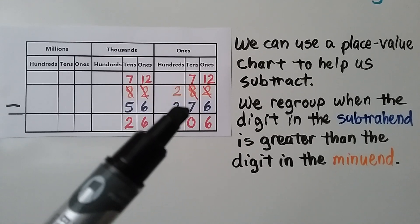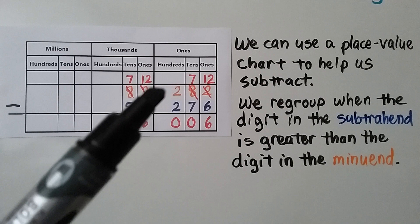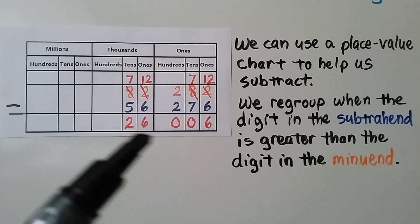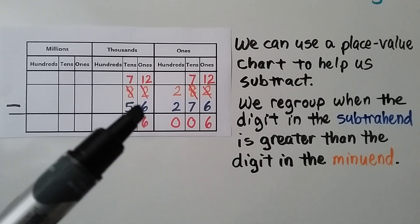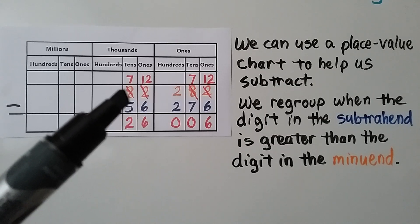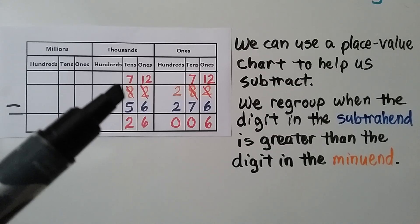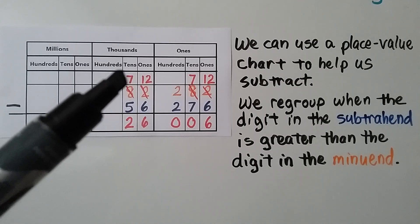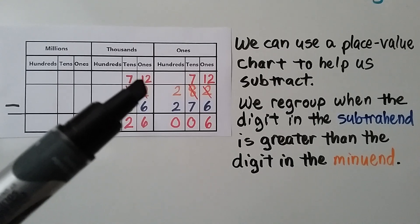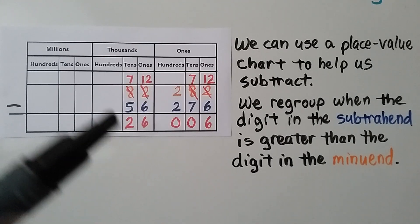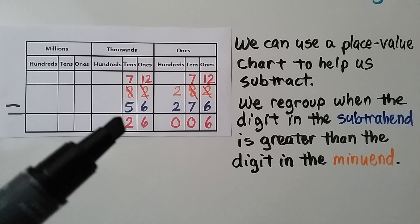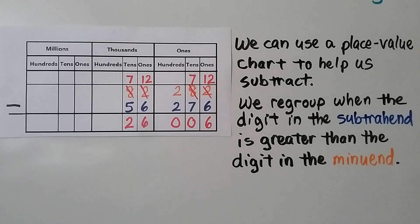12 minus 6 is 6. 7 minus 7 is 0. 2 minus 2 is 0. Now we have a 2 and need to take 6 away again, and we can't. So we asked the 8 for 1 — it becomes a 7 — and the 2 becomes a 12. 12 minus 6 is 6. 7 minus 5 is 2. Our difference is 26,006.